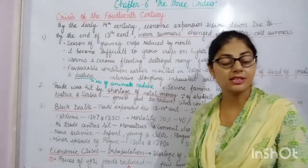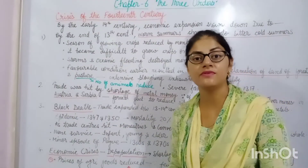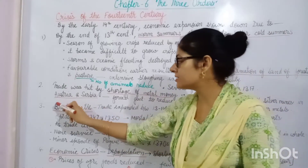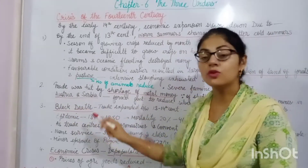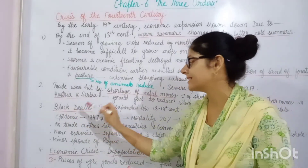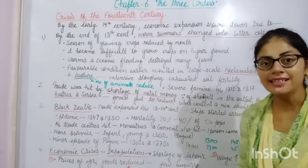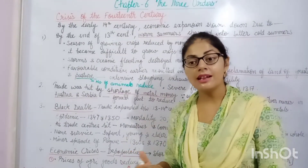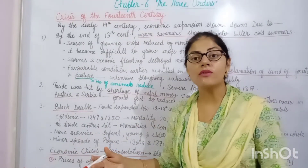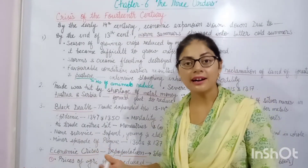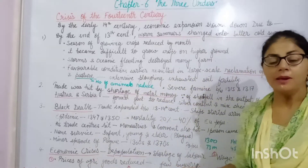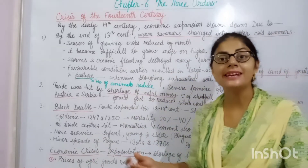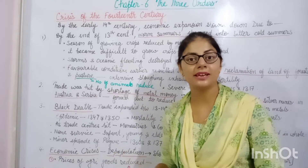The third crisis was more severe — it was known as the Black Death. Black Death refers to the large number of deaths that occurred during the 14th century because of the spread of a plague epidemic disease.